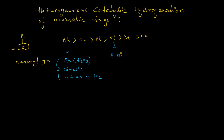If you take Raney Nickel, you have to apply greater than 100°C temperature as well as greater than 50 to 180 atm of hydrogen gas. This is simply due to the lesser reactivity of nickel compared to rhodium. The more reactive transition metal will require only very mild reaction conditions.